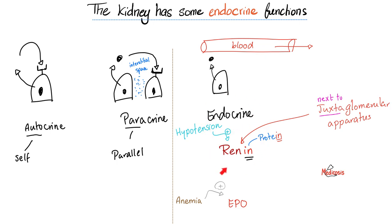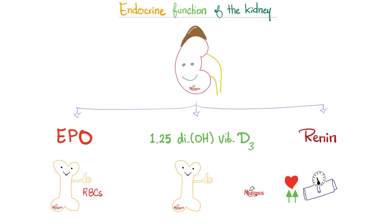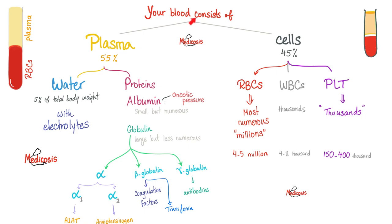This is the story of the renin, the EPO, and the vitamin D. EPO is to tell the bone marrow to make red blood cells. 1,25-dihydroxyvitamin D is the active form of vitamin D, which is super good for your bones, because vitamin D increases calcium, which is good for bones. And renin is good because it raises your blood pressure in case you have hypotension. As we have discussed before, your blood is made of plasma and cells.